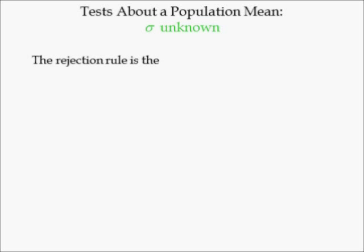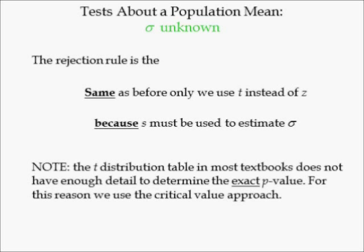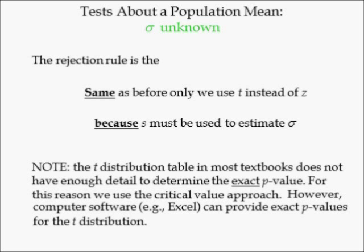If population standard deviation sigma is unknown, the rejection rule is the same as before, only we use T values instead of Z values, because sample standard deviation S is used to estimate population standard deviation sigma. The t-distribution table in most textbooks does not have enough detail to determine the exact p-value, so we use the critical value approach. However, computer software such as Microsoft Excel can provide exact p-values for the t-distribution.